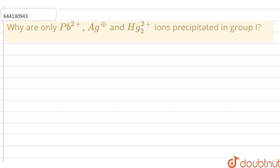Hello everyone, let's start the question. Why are only Pb²⁺, Ag⁺, and Hg₂²⁺ ions precipitated in group 1?